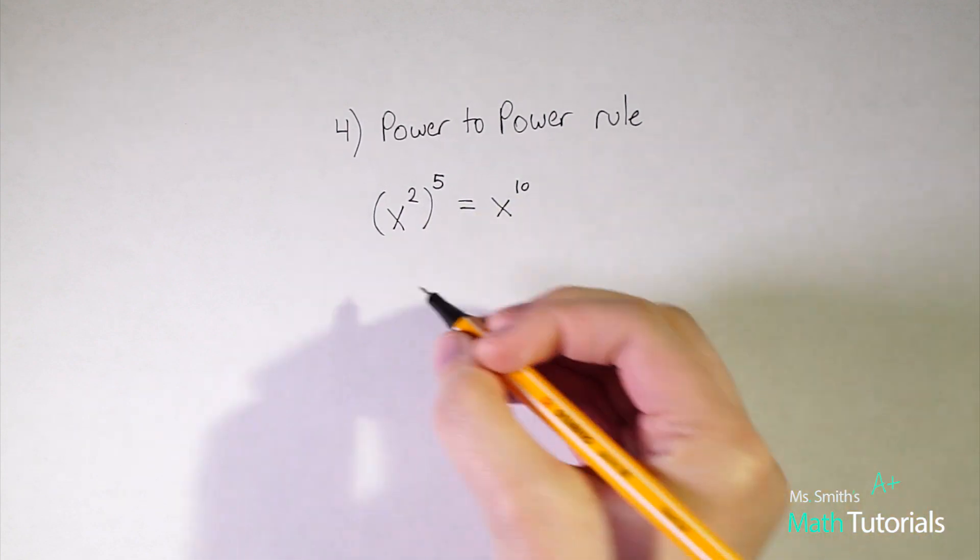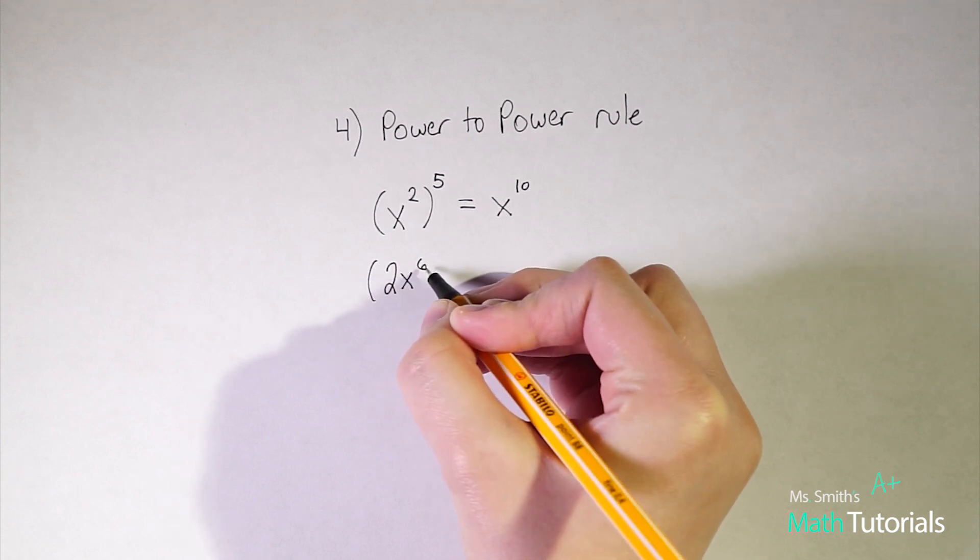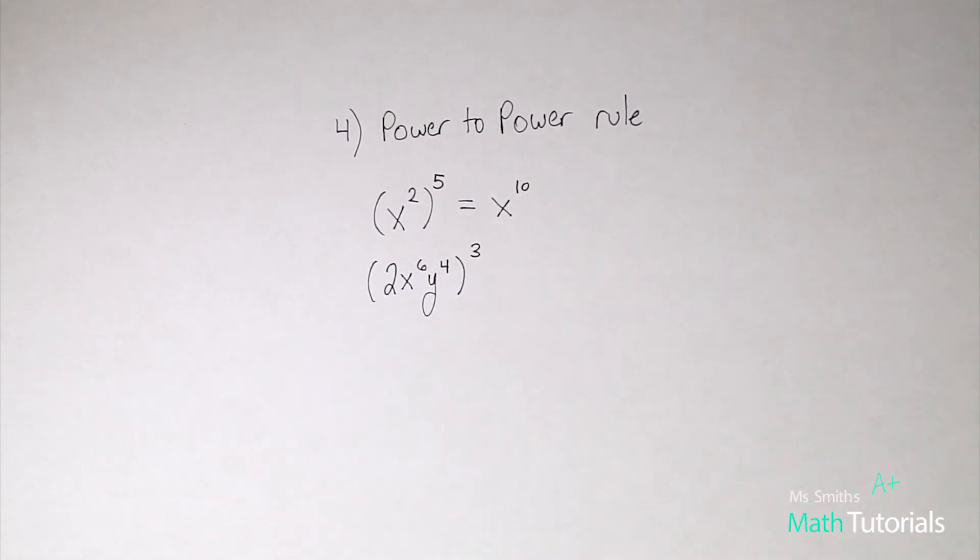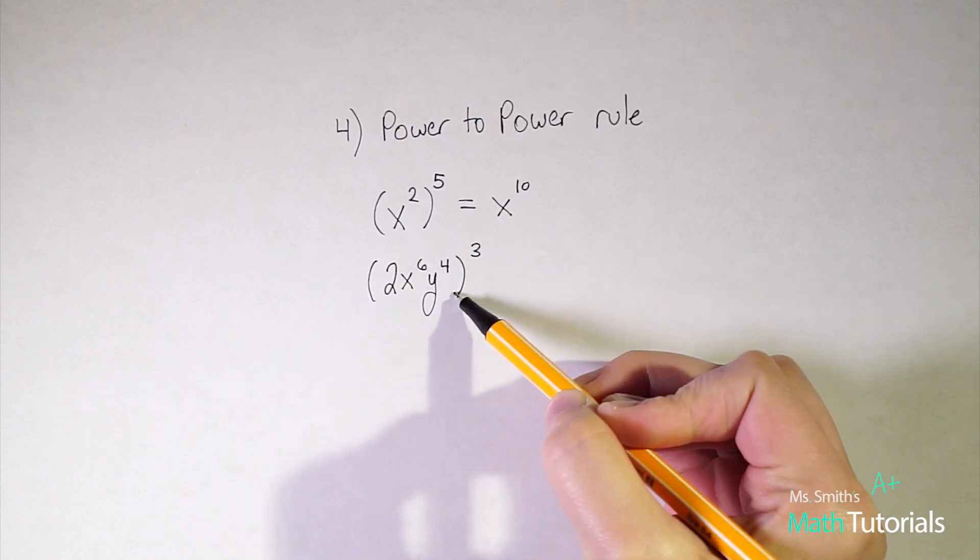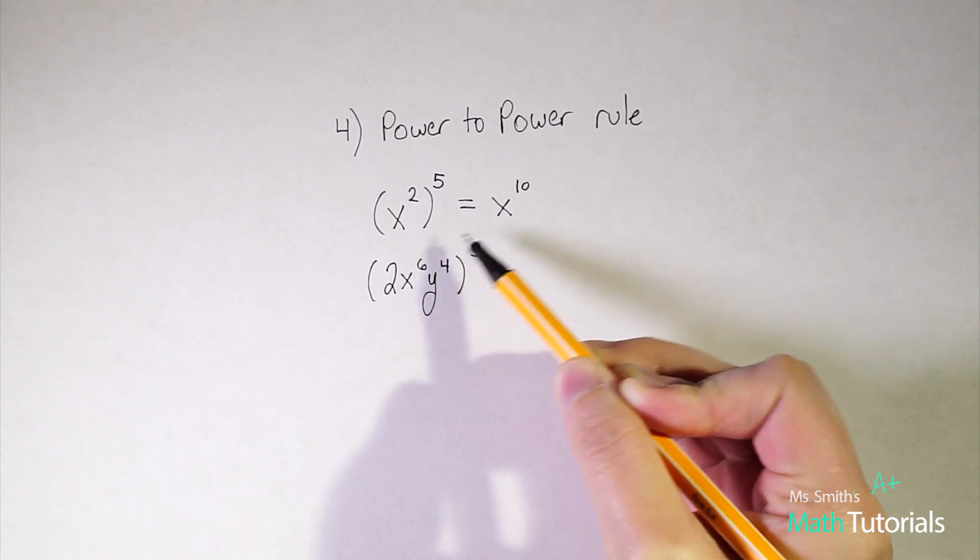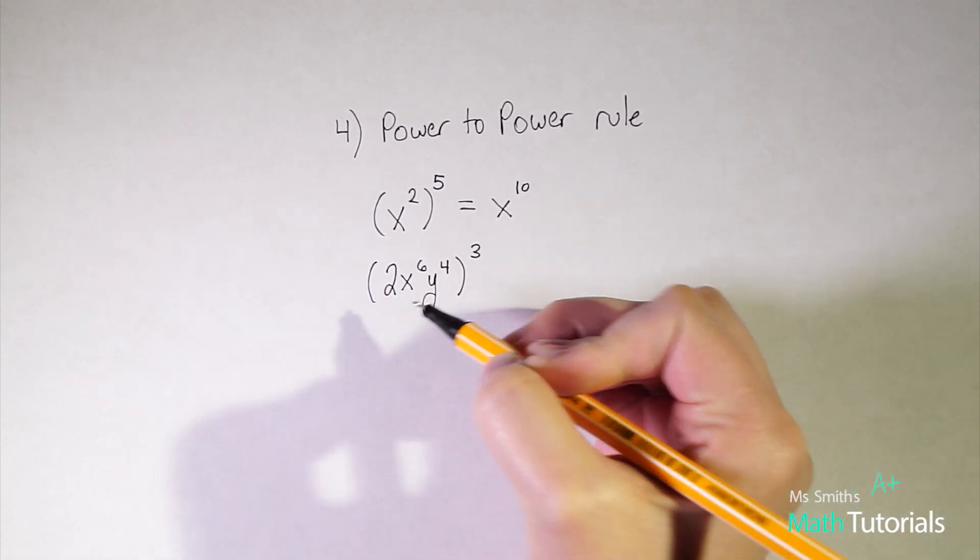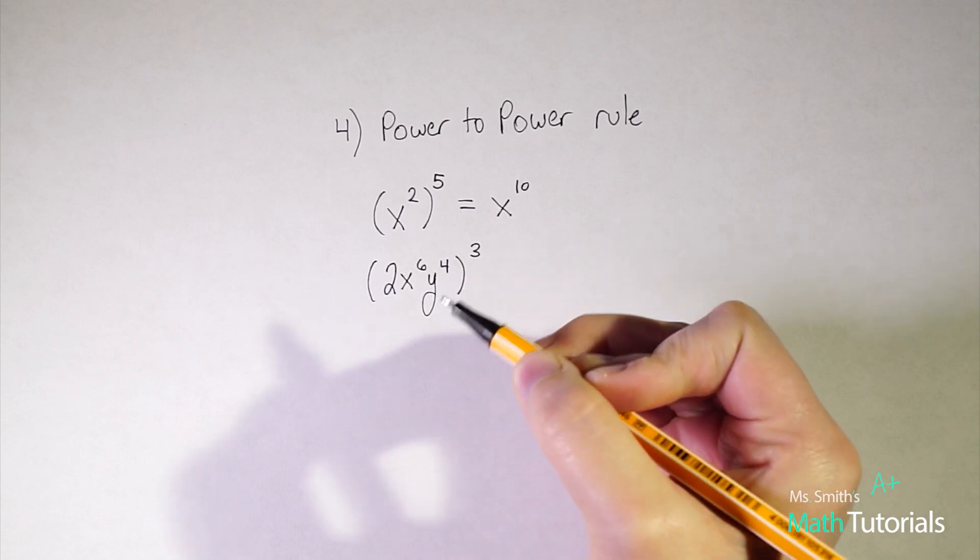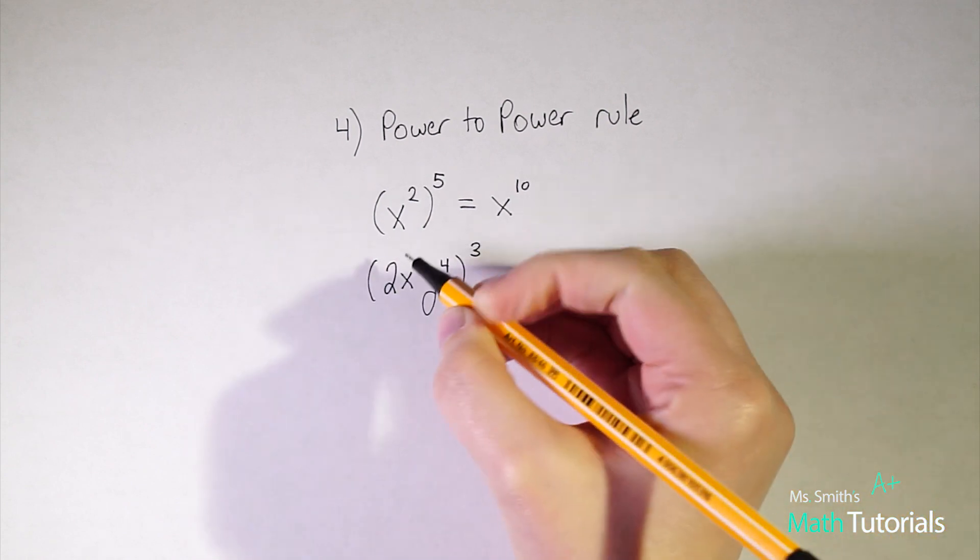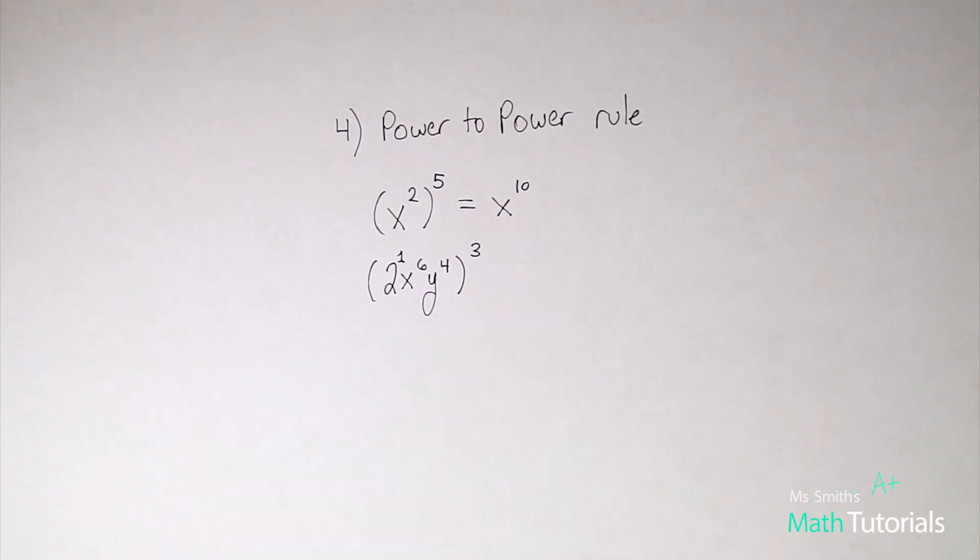Now it's not always this basic. Sometimes they'll give you a problem like let's say 2x to the 6th, y to the 4th, all brought to the power of 3. So you'll notice that everything contained within these parentheses is being brought to the power of 3. So since we've got powers to powers we're going to be multiplying our exponents. Now it's important to remember and I touched on this with the product rule that if a number or a letter doesn't directly say that it has an exponent it has an understood exponent of 1. So this 2 right here, I don't see an exponent with it. That means there's an understood exponent of 1 there.